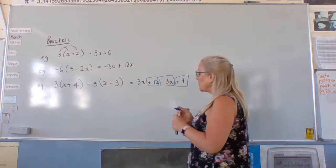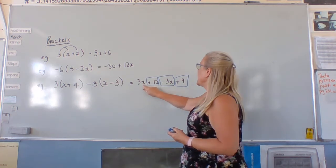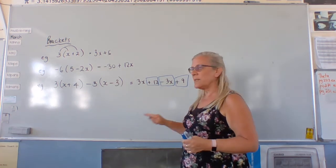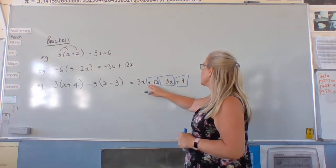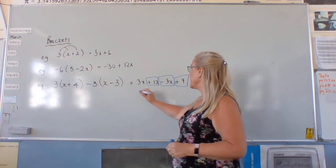Right? So, we don't go three x plus three x is six x. We go three x minus three x is no x's. And twelve plus nine is twenty-one.